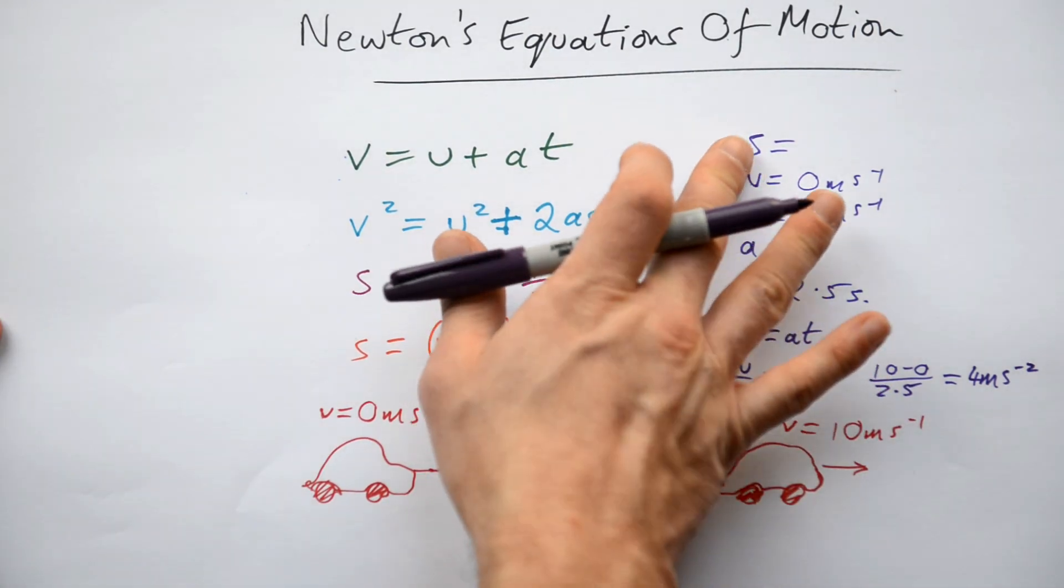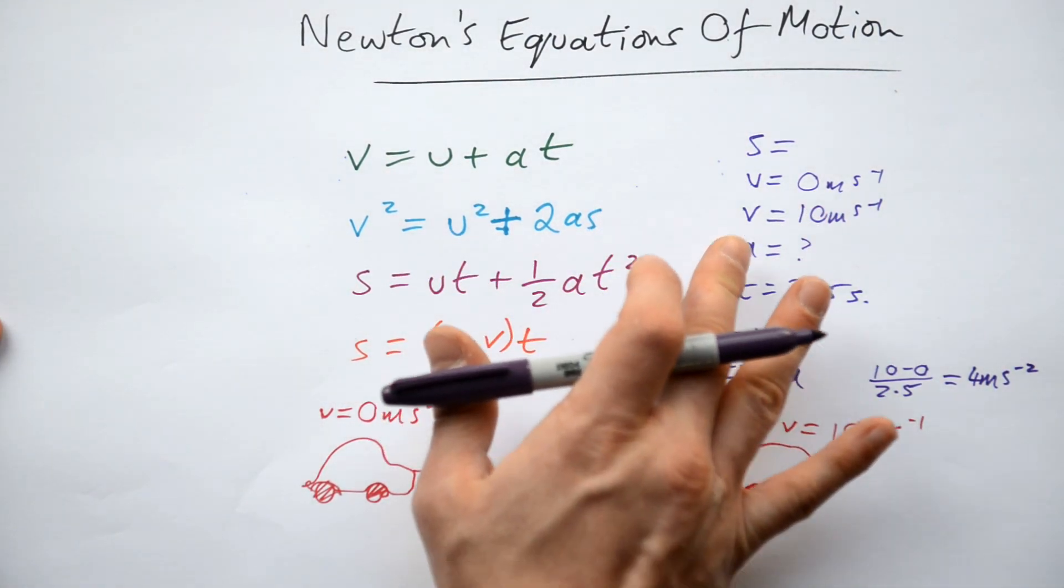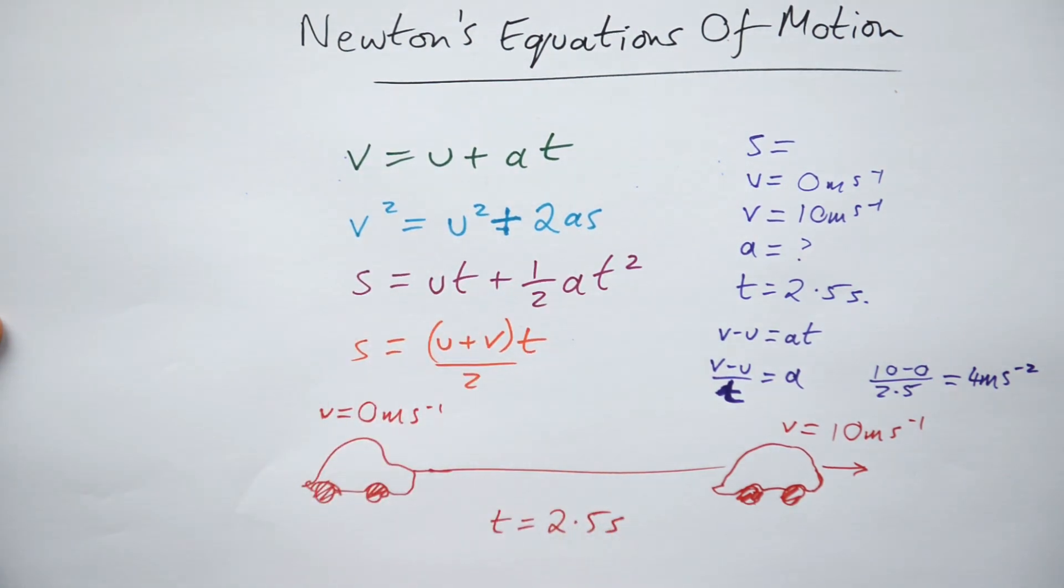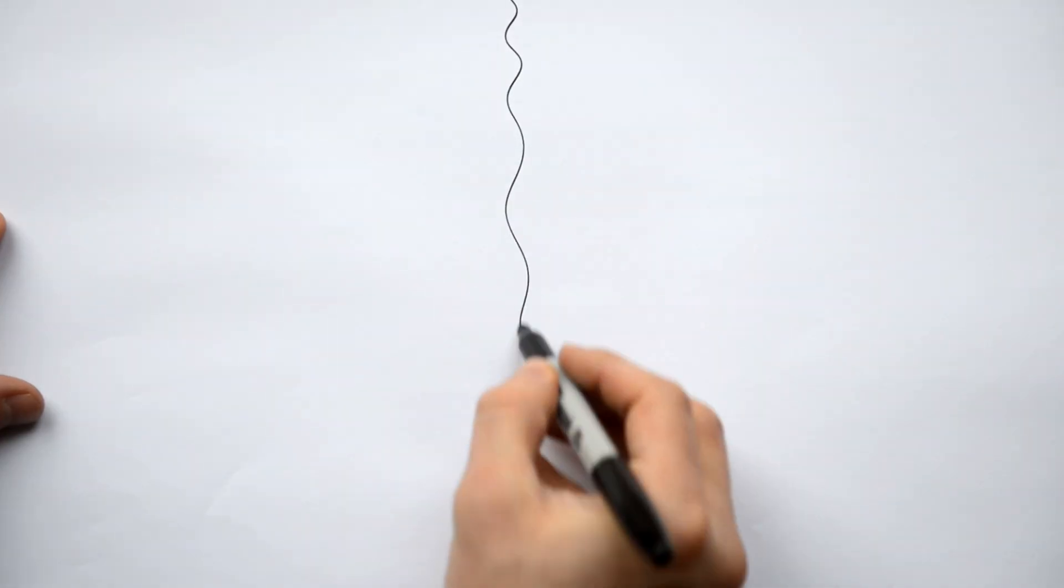So that's the process. What we do is write down, SUVAT-wise, what we know, and what we're trying to find out. Choose the right equation from the four, you don't need to learn these, you're always going to get given these, and then rearrange if necessary, and plug the numbers in. Easy. So let's just look at another couple of cases. We'll see if that can be applied.